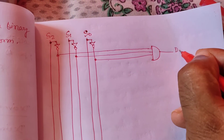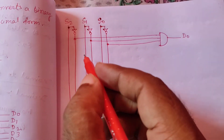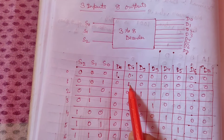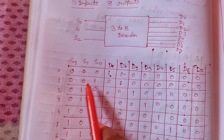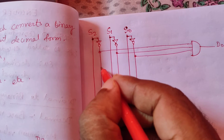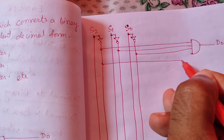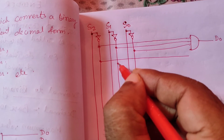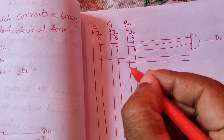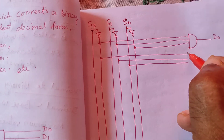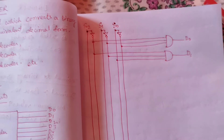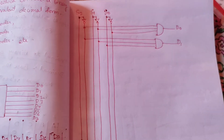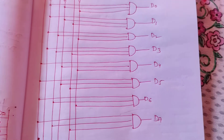Similarly for D1, we see it is 0 0 1 in the truth table. So D1 = S2' · S1' · S0 — that is, S2 complement AND S1 complement AND S0. We construct D1 from these three inputs.